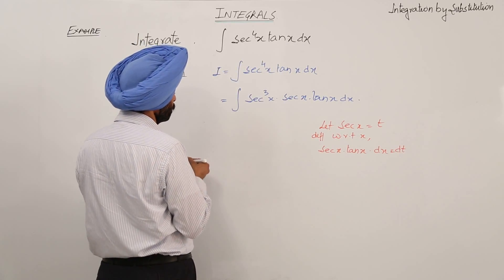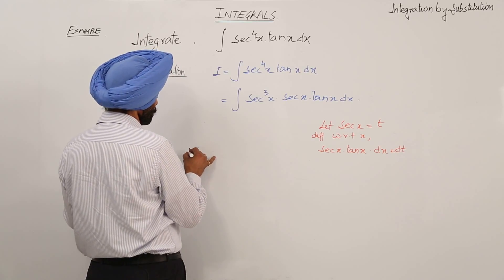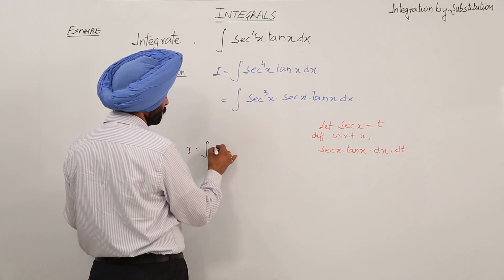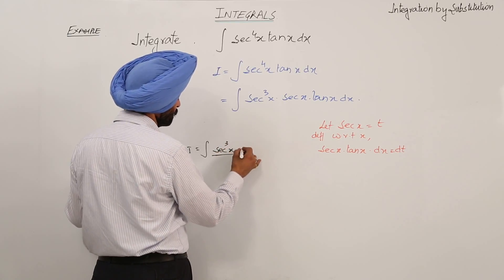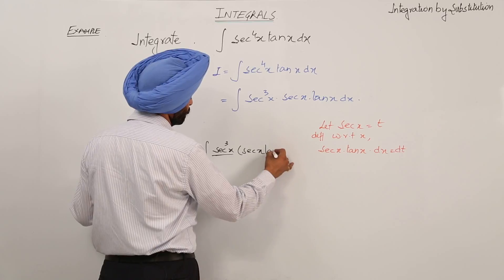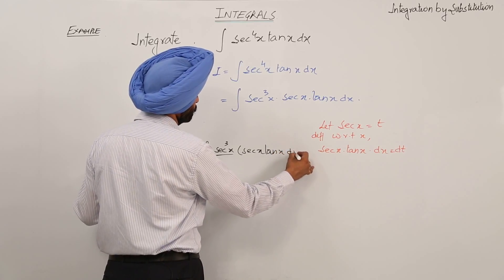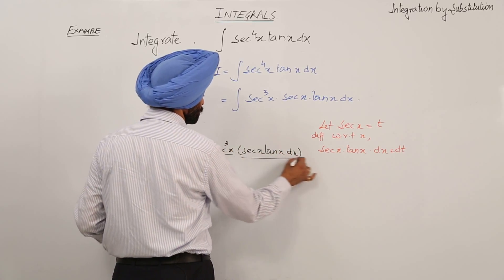So now our question becomes integration of secant cube x, one thing, and secant x tan x dx as separate thing.